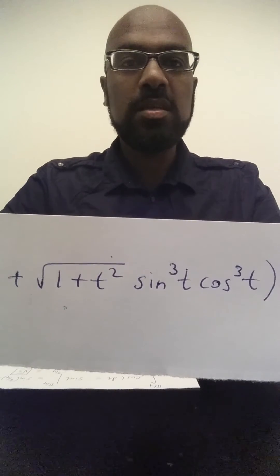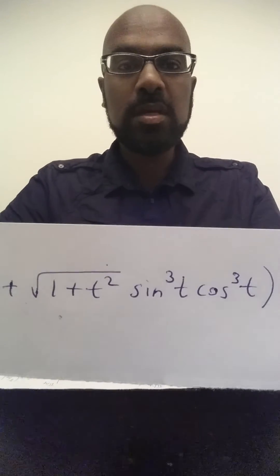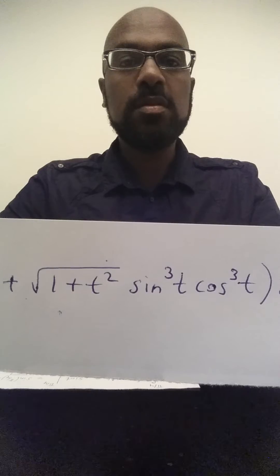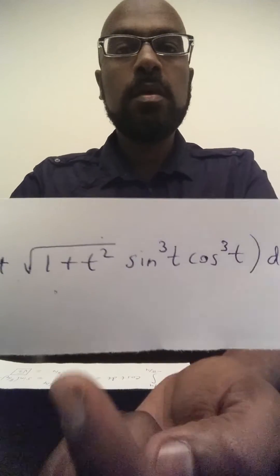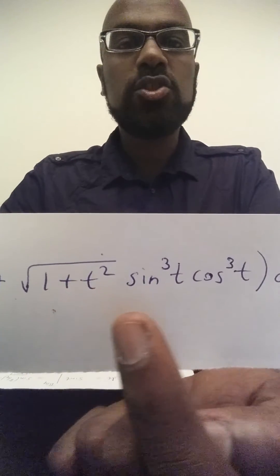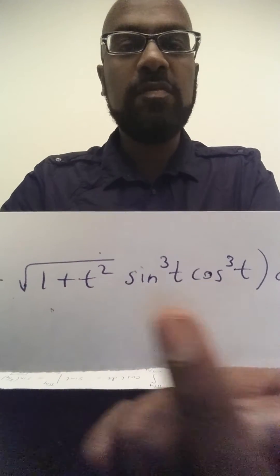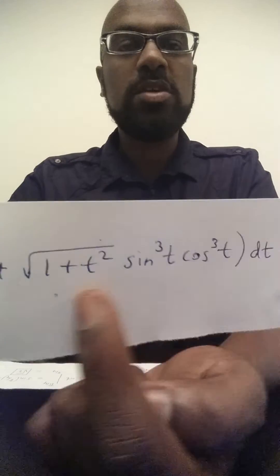and cosine t is an even function, so cosine t cubed is even. So we have the product of an even function, an odd function, and an even function, so this entire function here is odd.